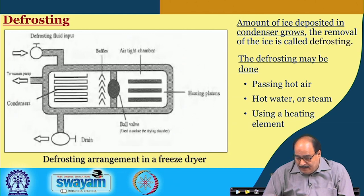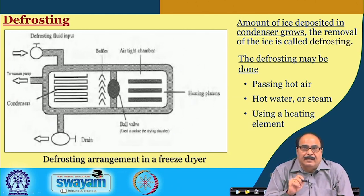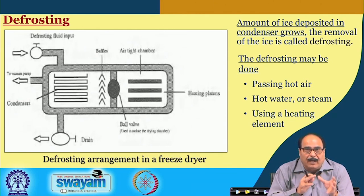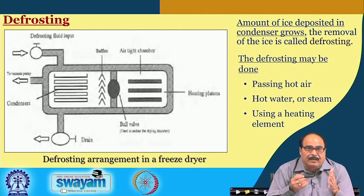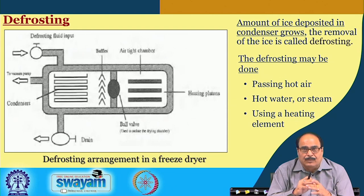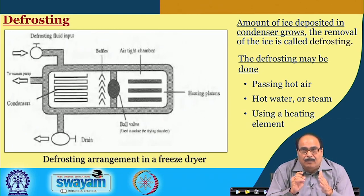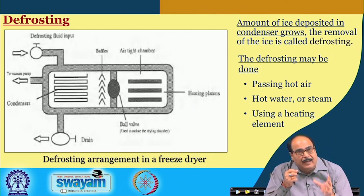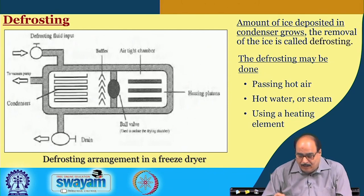Defrosting: the amount of ice deposited in the condenser grows with the progress of the freeze drying process and must be continuously removed. Removal of ice from the condenser is called defrosting. It is a very important step for process efficiency and economics — if the ice is not defrosted regularly and deposits inside the condenser system, the rate of sublimation and process efficiency will be adversely affected. Different ways to defrost include passing hot air, hot water, steam, or using a heating element to convert the ice back into liquid water and allow it to flow out.